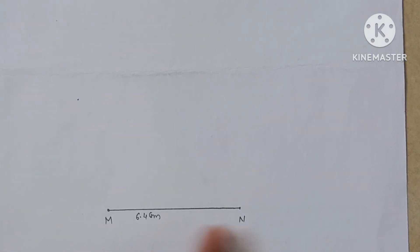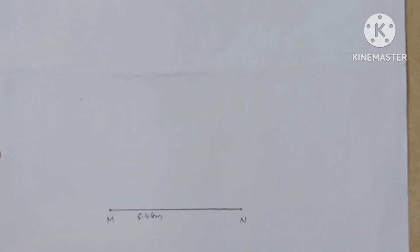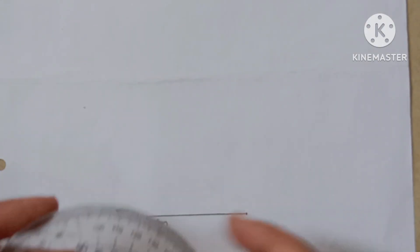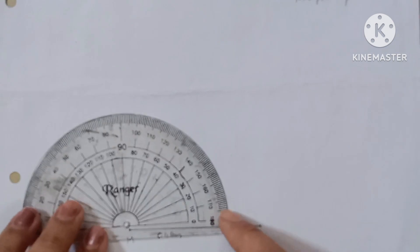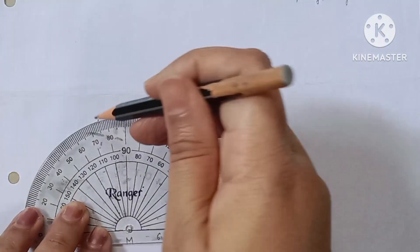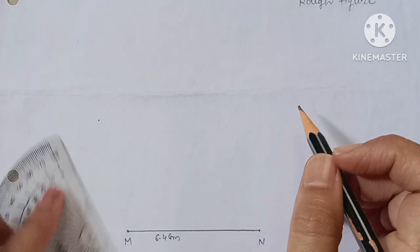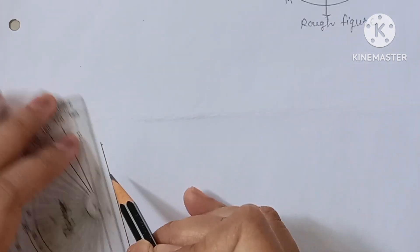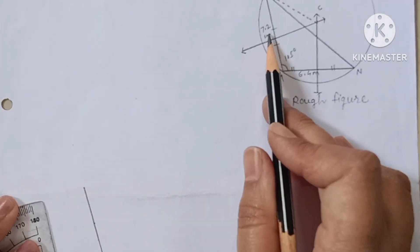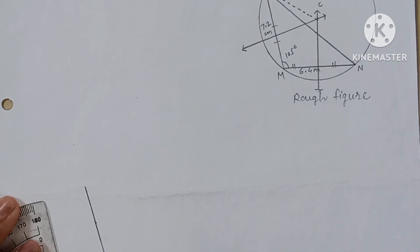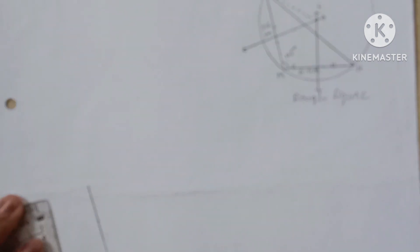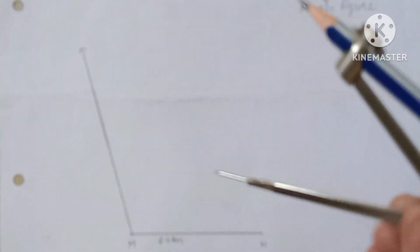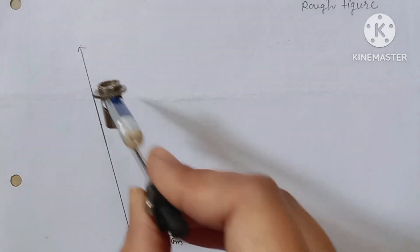Now for the fair figure, first draw the base MN equal to 6.4 centimeters. After that, angle M is given as 105 degrees — draw the angle M at 105 degrees. Now take 7.2 centimeters distance in your compass, keep the compass point on M and make an arc.